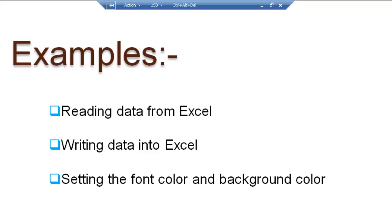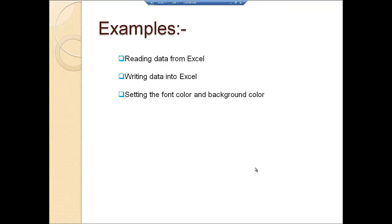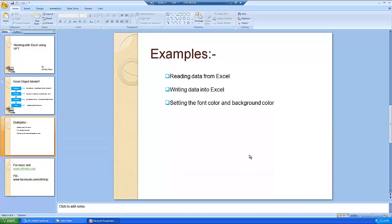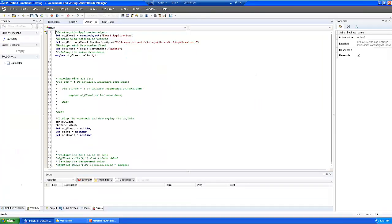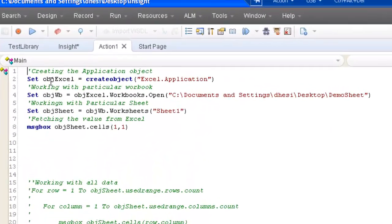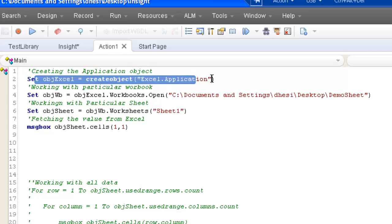The idea is that Excel is used to read data from it, write data to it, or use it for reporting purposes. For example, we can fetch data for test cases or report pass/fail status using font color or background color — green for success, red for failure of a particular test case. Let's go to UFT and see how the code looks.